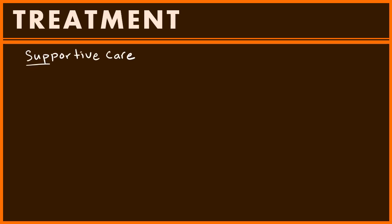After diagnosing cholecystitis, the next step is management. Initial management is primarily supportive care. These patients have had fever, often vomited multiple times, and are not eating well, so the first step is hydration — which also improves surgical outcomes. Keep them NPO; an NG tube for gastric decompression is an option if vomiting is severe but not routinely necessary. For pain, NSAIDs are helpful since prostaglandins play a role; if contraindicated due to renal disease or bleeding, opioids are a second-line option.